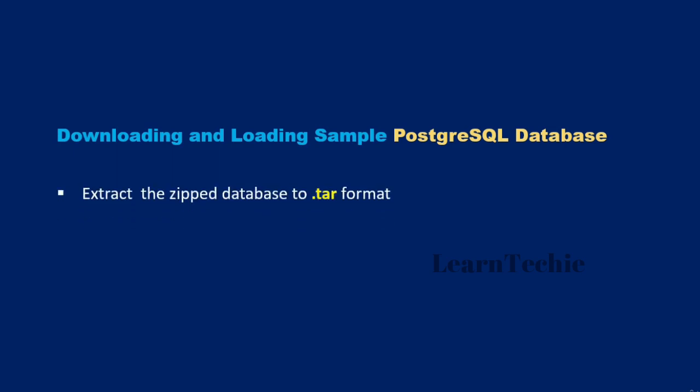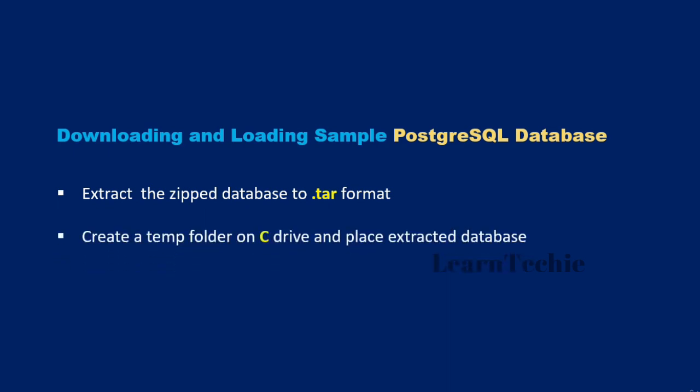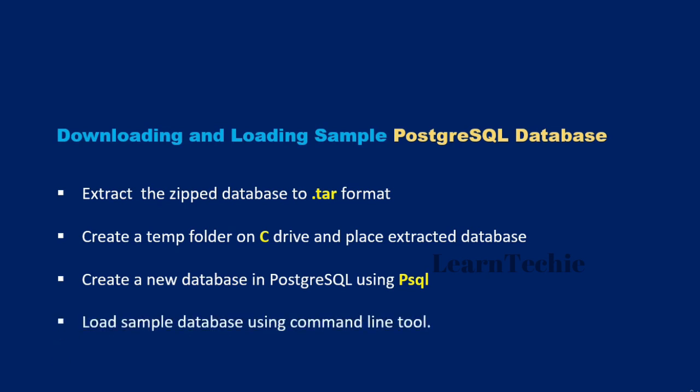Let me walk you through the steps. We're going to start by extracting the zipped database to a .tar format. We'll create a folder on the C drive and place the extracted .tar file into that folder. We'll create a new database using the PSQL tool — you need to create a database to restore the sample database into. We'll then load the sample database using a command-line tool (Command Prompt on Windows, terminal on Mac), and verify by running a basic query.